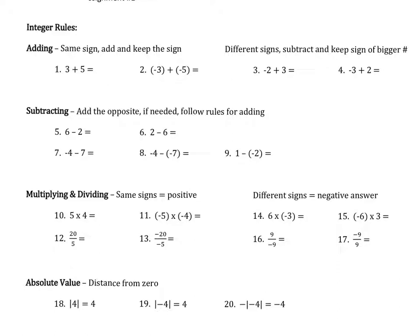Adding is about the simplest thing we can do. If you add numbers together that have the same sign, we add them and keep the sign. For example, number 1 here you can see we have 3 plus 5. I want to make sure it's absolutely clear that this 3 is positive, but we don't ever write a leading plus sign — only if it's negative do we write it in front. So 3 plus 5 is 8.